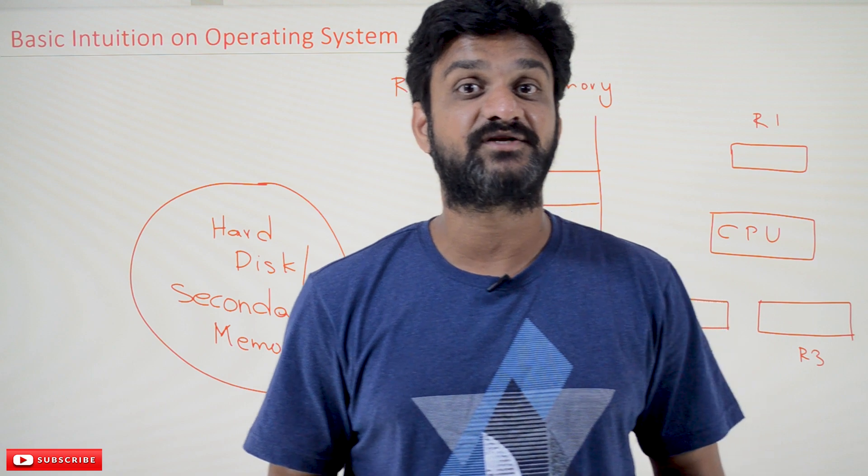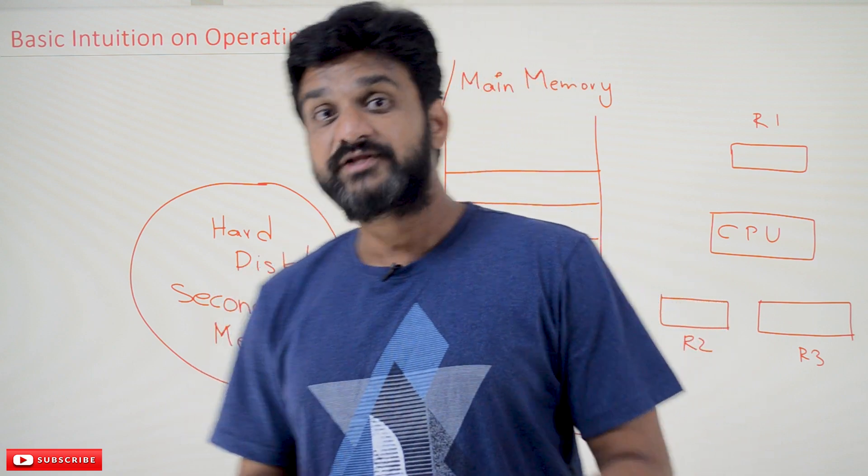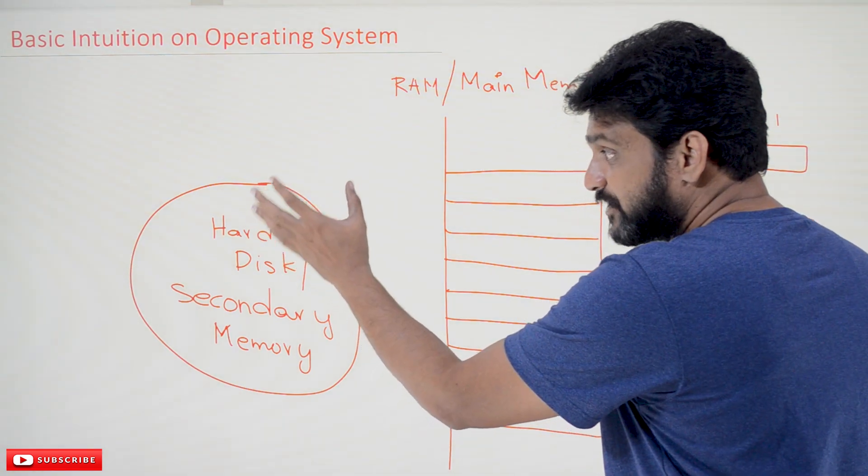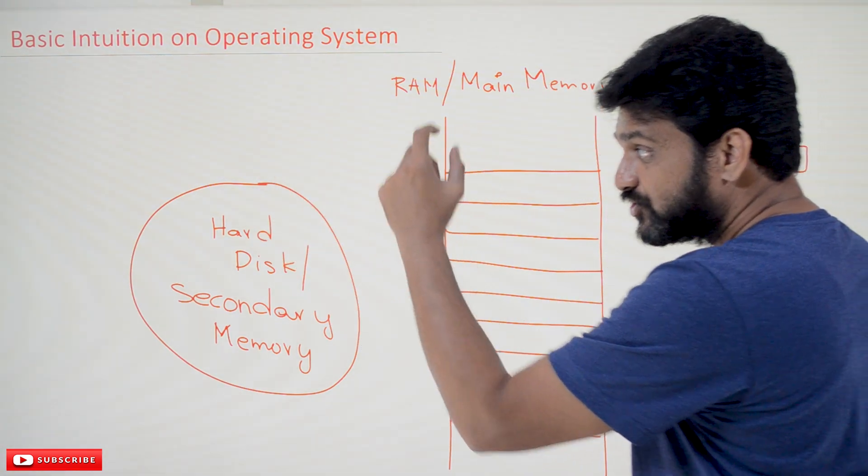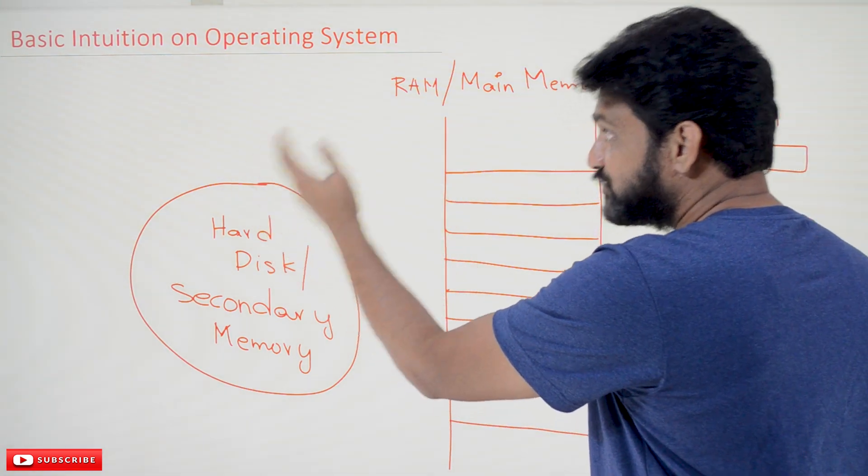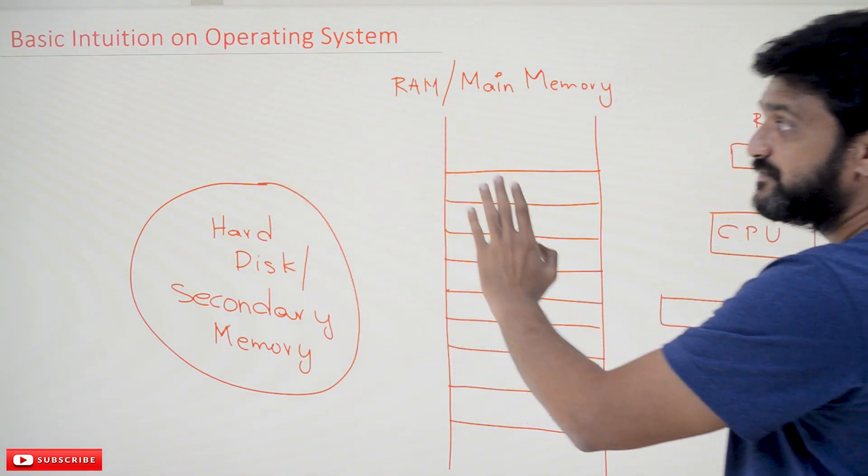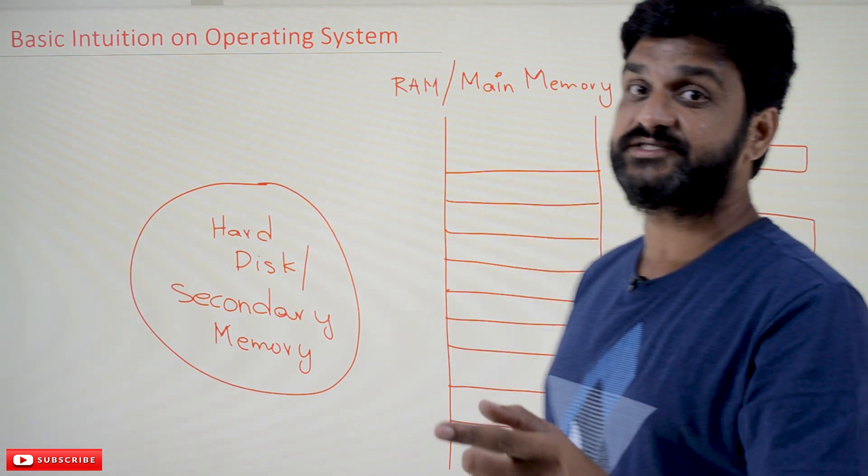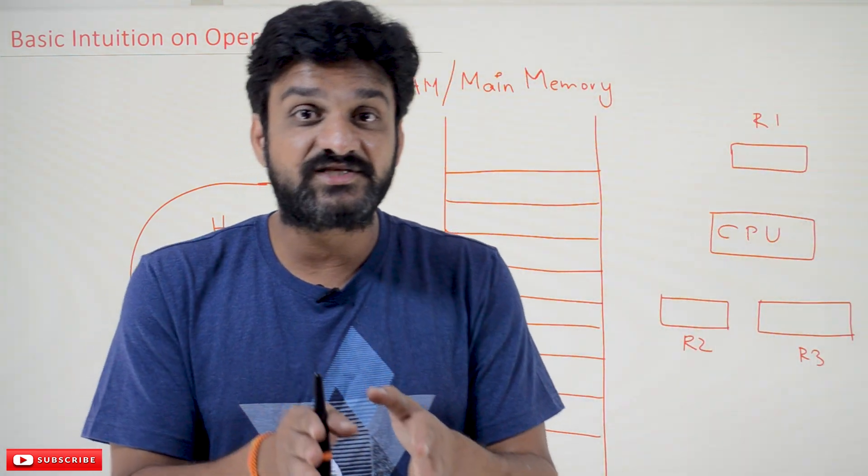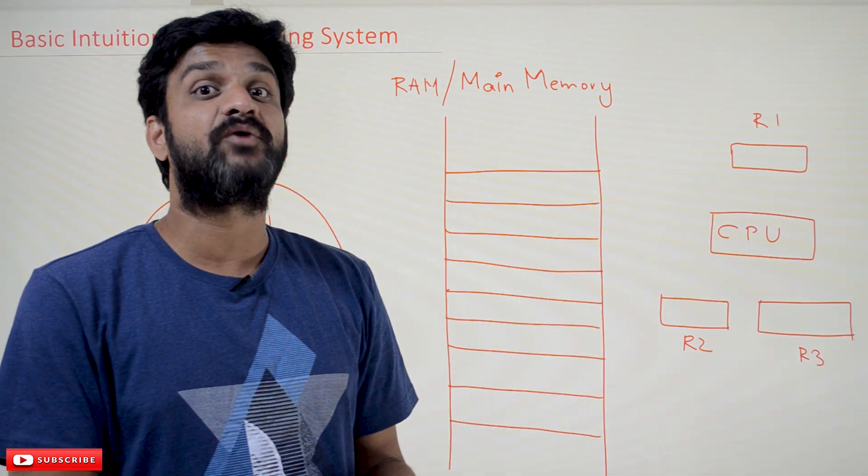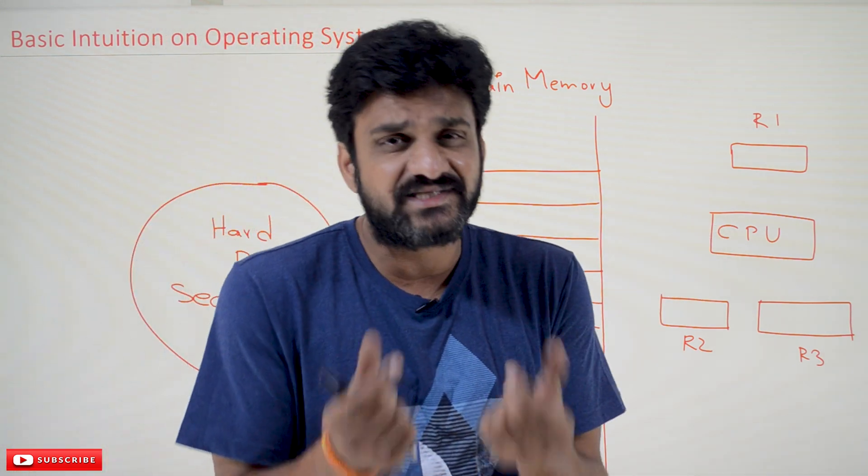Now what the operating system will do is bring the program, the application that is stored on the hard disk, from the hard disk to the main memory. That shifting the program from the hard disk to the main memory is done by the operating system, and shifting the instructions from the main memory to the CPU is also done by the operating system. This is the very basic role and responsibility of the operating system.